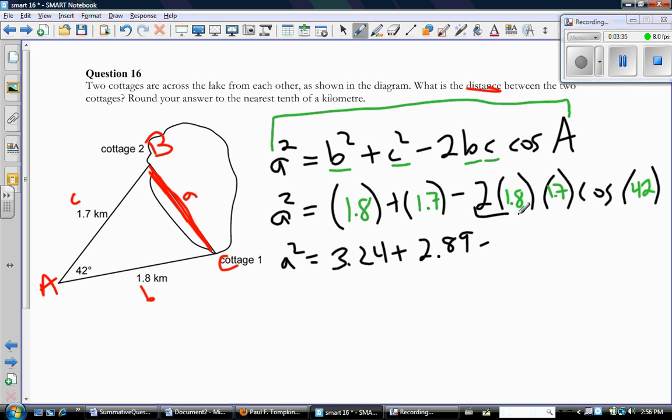Now, I like to multiply these three things together at this stage. So, that gives me 6.12. And then I do cosine 42 in my calculator and get 0.7431.